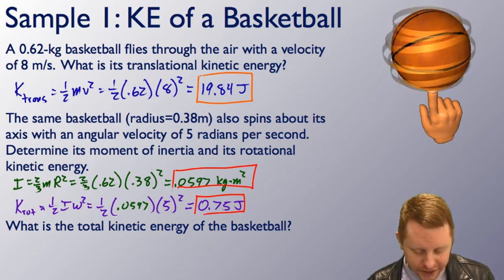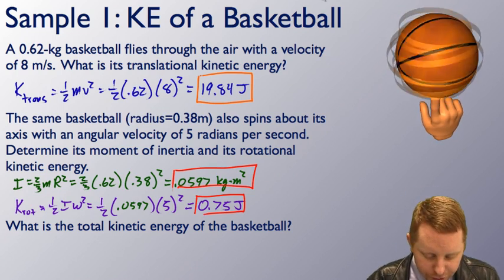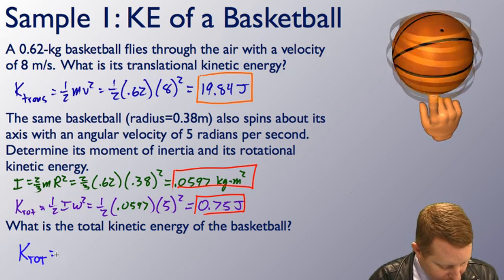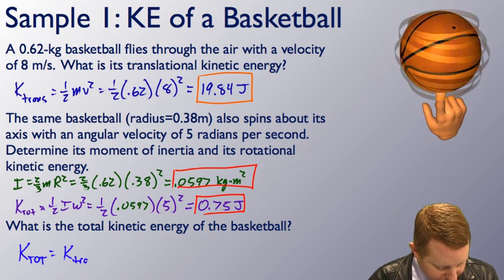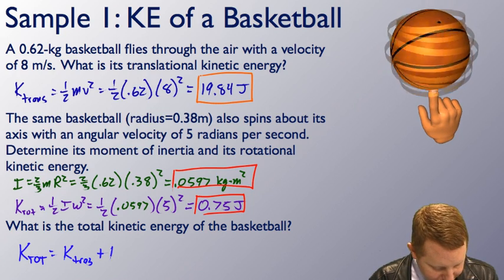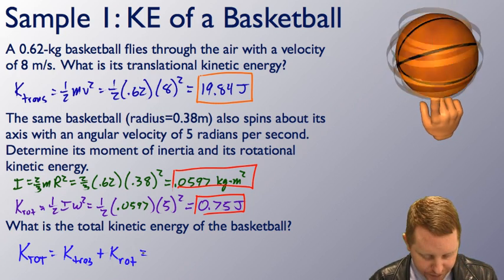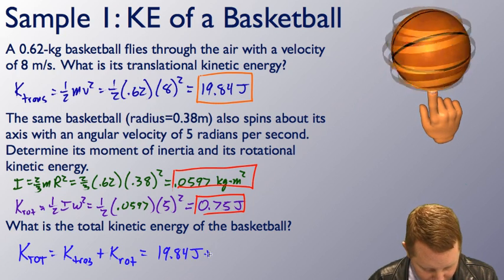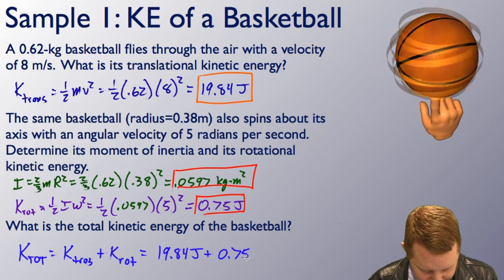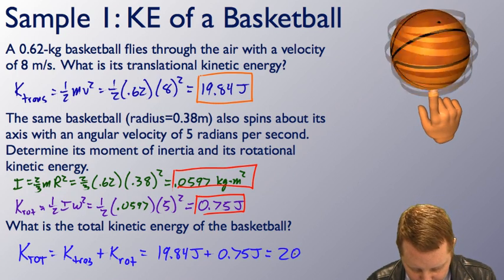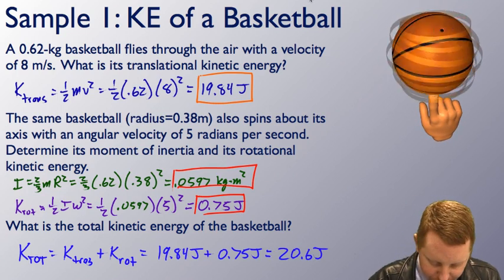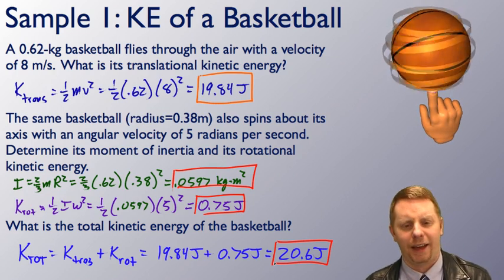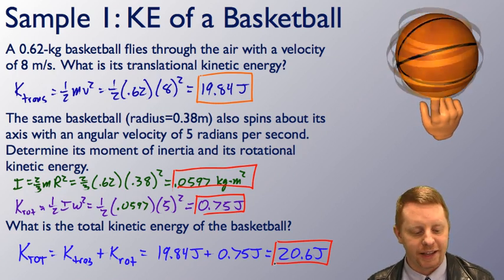What's its total kinetic energy? All we have to do is add these together. The total kinetic energy is the translational kinetic energy plus the rotational kinetic energy, which is 19.84 joules plus about 0.75 joules, for a total of right around 20.6 joules. That's a way we can apply our new understanding of rotational kinetic energy.